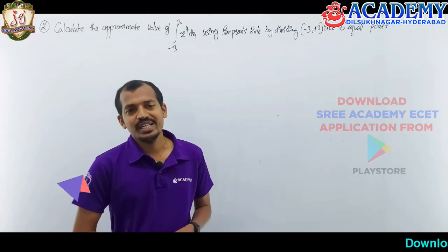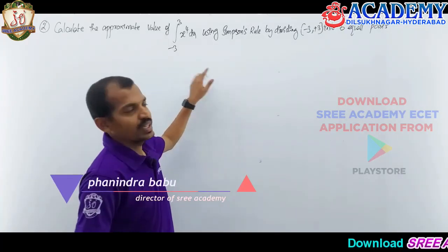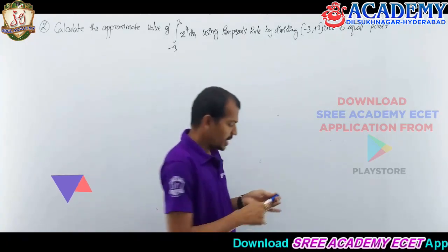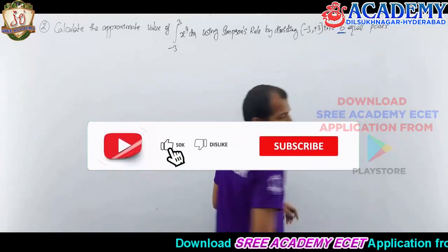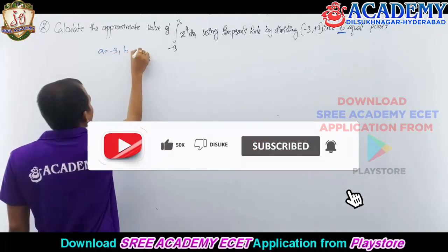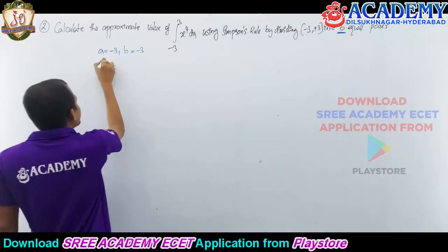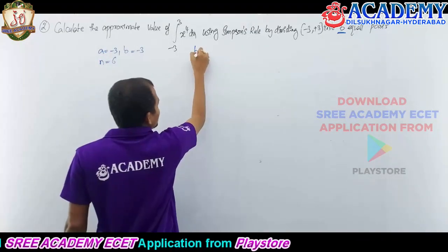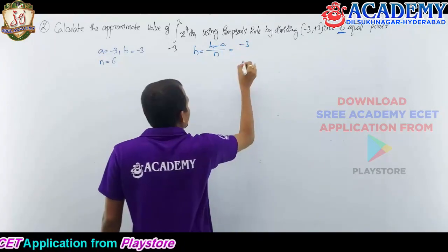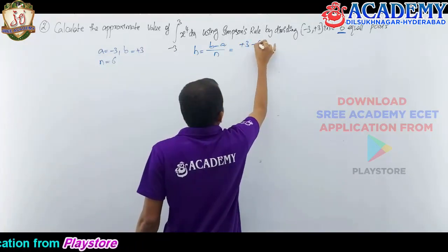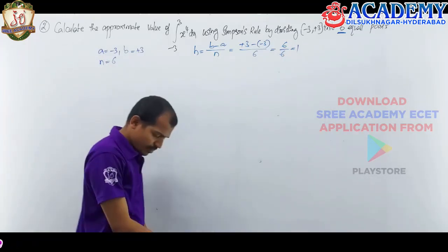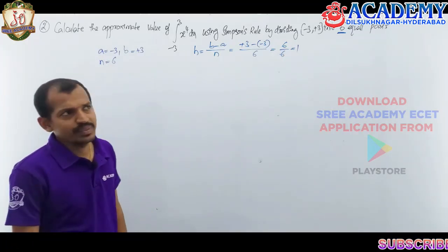The question gives the integral from minus 3 to 3 of x to the power 4 dx, dividing into 6 equal parts. So a is minus 3, b is plus 3, and n is 6. From here, h is b minus a divided by n, that is 3 minus (minus 3) divided by 6, which is 6 by 6, so h equals 1.